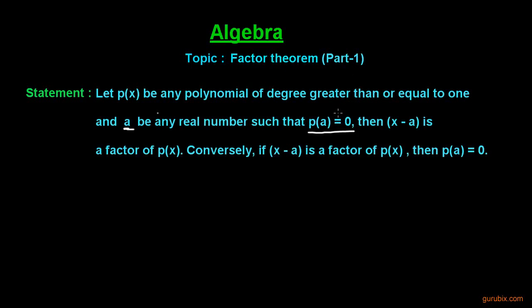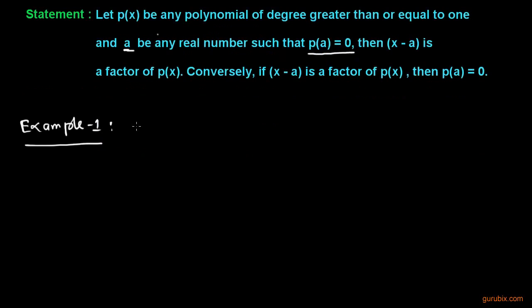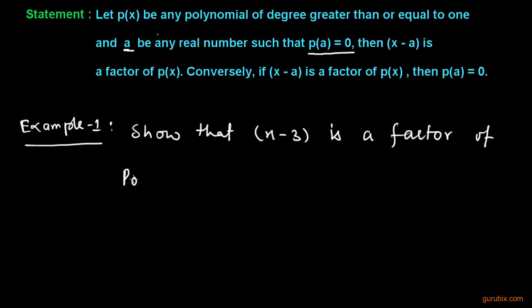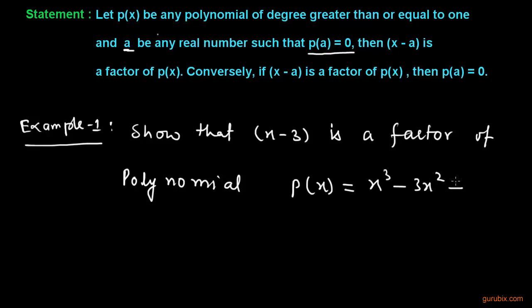We shall learn this Factor Theorem through three examples. Here is the first example: show that (x minus 3) is a factor of the polynomial p(x) equals x cubed minus 3x squared plus 4x minus 12.